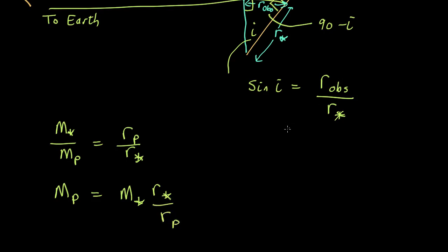But if you rearrange this, we find that R star is R obs over sine I. So that means we know that M planet equals M star R obs over R planet sine I.